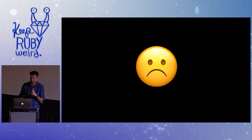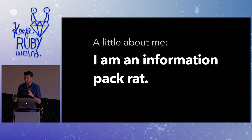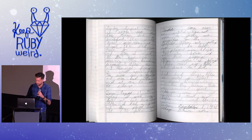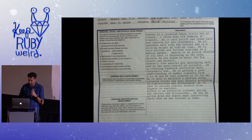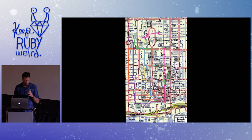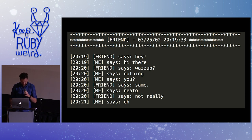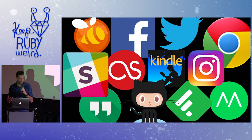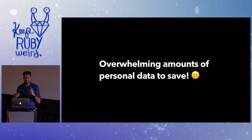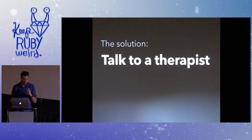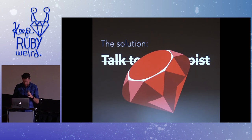This made me really sad. A bit about me: I'm an information packrat. I have my grade five journal, report cards from kindergarten, every movie stub, records of my walks through Toronto before Google Maps. I even saved all my chat logs from high school — horrifically, because these are really not worth saving — but I obsessively saved them. With all the services coming up now, I'm just being inundated with personal information. The obvious solution might be to talk to a therapist, but I used Ruby to solve the problem and went about building a Memex.